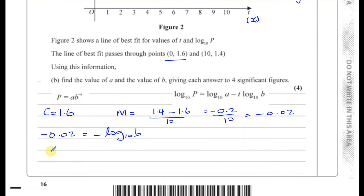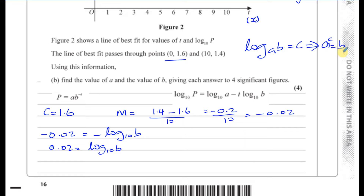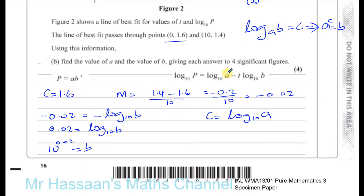The minus signs on both sides cancel, so 0.02 equals log base 10 of B. Using the definition of logarithms, log base A of B equals C means A to the power of C equals B. So we can rewrite this as 10 to the power of 0.02 equals B. Also, since c equals 1.6, and c is the same as log base 10 of A, we have 1.6 equals log base 10 of A.